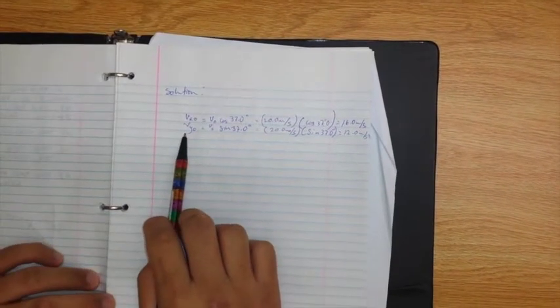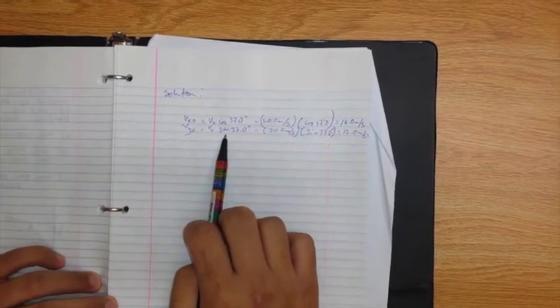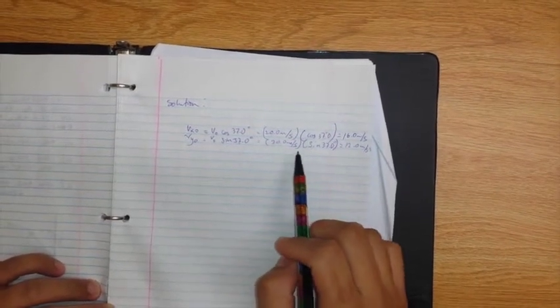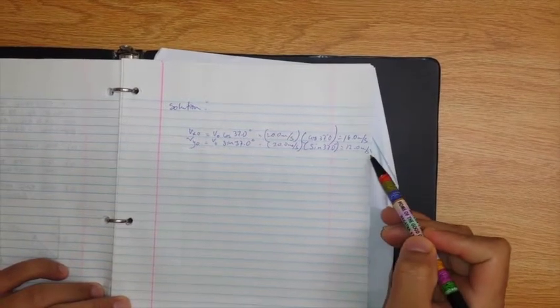And for the y component, we multiply v initial by sine 37 degrees, which is equal to 20 meters per second multiplied by sine 37 degrees, which equals 12 meters per second.